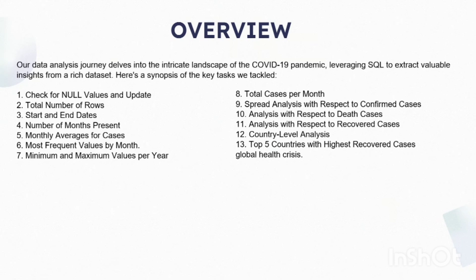Sixth was most frequent values by month: by identifying the most frequent values for confirmed cases, deaths, and recoveries each month, we uncovered recurring patterns and anomalies in the data. Seventh, minimum and maximum values per year: we determined the minimum and maximum values for confirmed cases, deaths, and recoveries on an annual basis, providing insights into the extremes of pandemic impact. Eighth, total cases per month: quantifying the total number of confirmed, death, and recovery cases each month, we gained a nuanced understanding of the monthly dynamics of the pandemic.